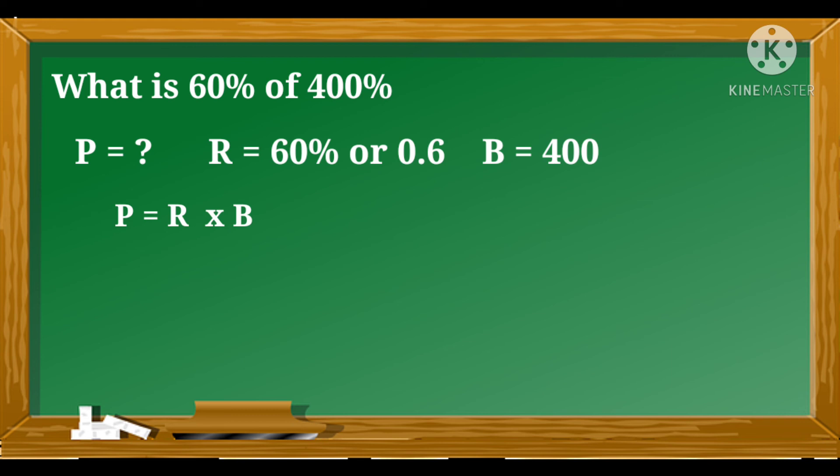Substitute the value of the rate and the base to our formula. So, 0.6 times 400. Multiply 400 by 0.6. So, zero times six is equal to zero. Zero times six is equal to zero.